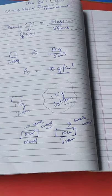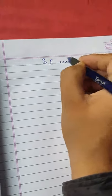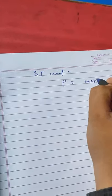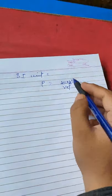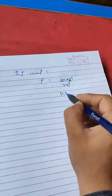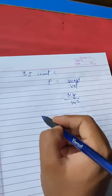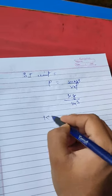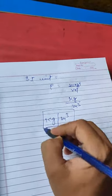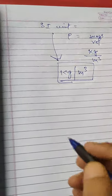Just remember this. Now, the SI unit of density: since the formula for density is mass divided by volume, and the SI unit of mass is kg and the SI unit of volume is meter cube, the SI unit of density is kg per meter cube.